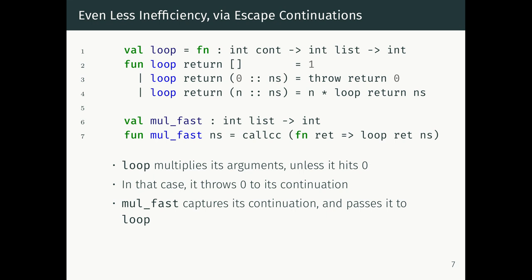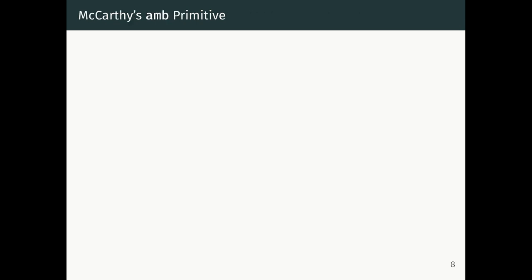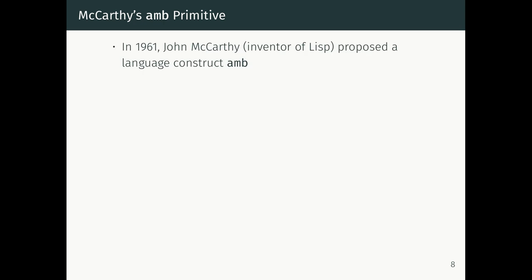This is what makes implementing continuations a bit expensive. Because continuations are just values, sometimes to implement first-class continuations you're going to have to copy your stack and have multiple copies of it. And that's what we're going to see in the very next example: a primitive called AMB, introduced in 1961 by John McCarthy, the inventor of Lisp.